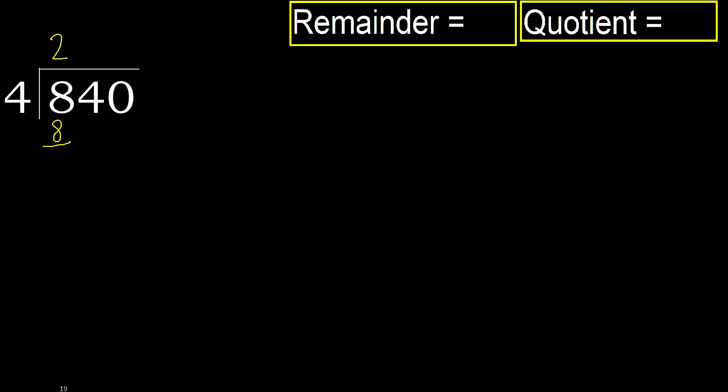Ok. Subtract. 8 minus 8 is 0. Next, eliminate 0 on this side.